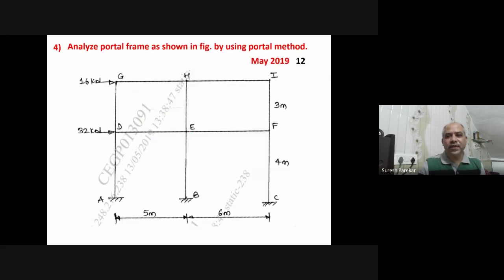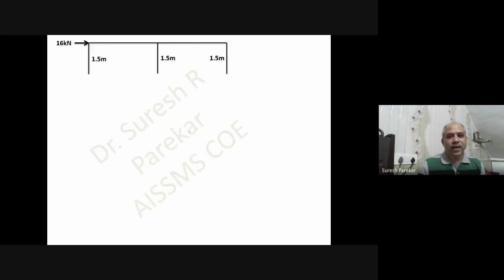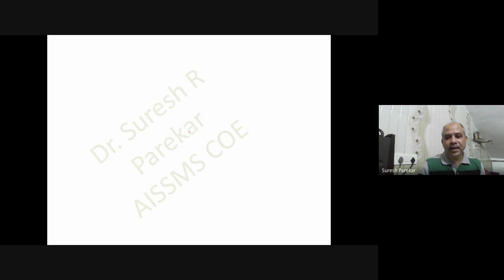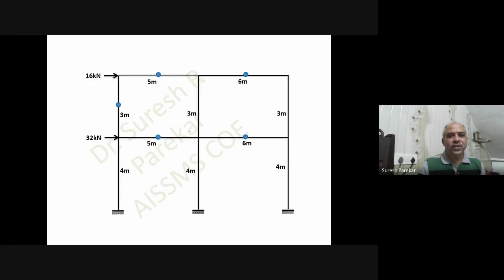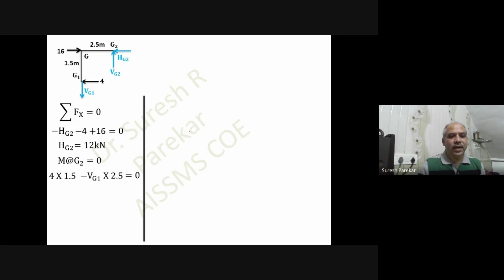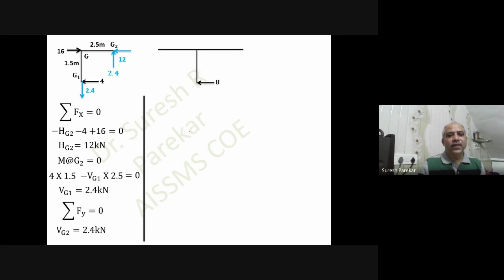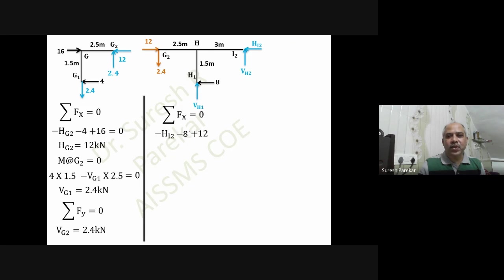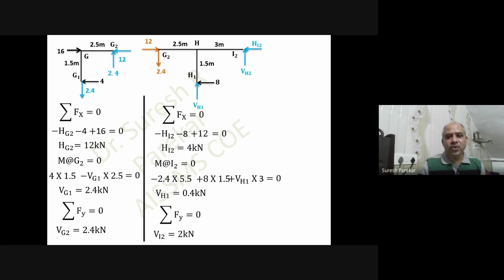The fourth problem is from May 2019 for 12 marks. With 16H1, H1 equals 4 kilonewtons, and H2 equals 12 kilonewtons. Inflection points are identified and named. For joint G, HG2 is calculated, then moment about G2 gives VG2. With 2H1 equal to 8: Fx gives HI2 equal to 4 kilonewtons, moment about I2 gives VH1 equal to 1.4 kilonewtons, and Fy gives VI2 equal to 2 kilonewtons.